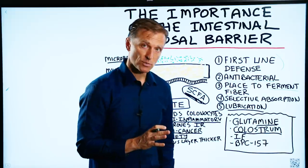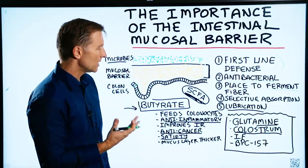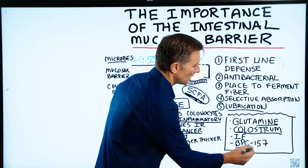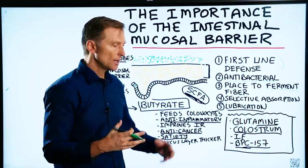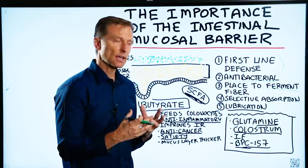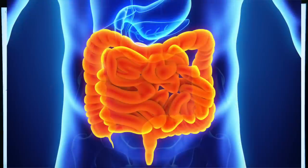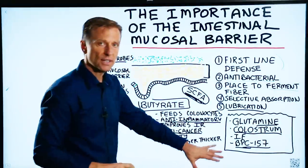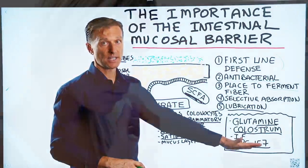There's one more thing I want to mention, which is very interesting — I'm experimenting with it with several people right now — it's called BPC-157. This is a natural peptide that you can take in a pill, and it actually heals the lining of the gut. I'm going to give you more information on this in the upcoming weeks, but it's one of the peptides that doesn't have to be injected — you can take it orally in a pill.